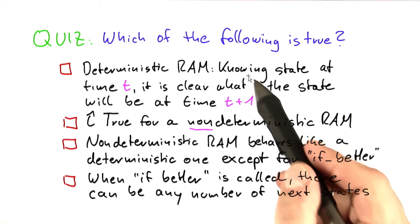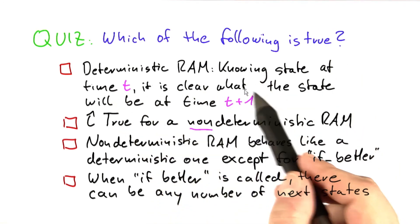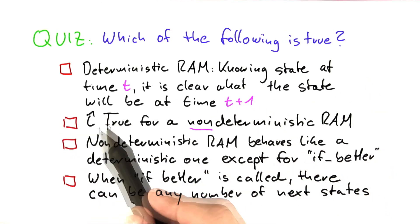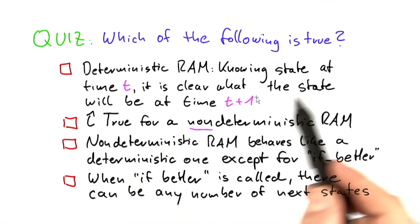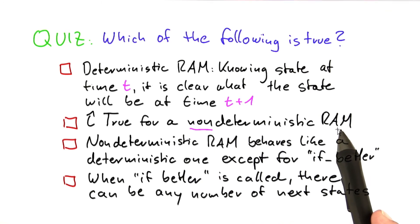on a deterministic RAM, if we know what state that machine is in at a time point t, we can clearly state what the state will be at time t plus 1. The second one is, I want you to tell me if this here were true if instead of a deterministic RAM, we were talking about a non-deterministic RAM.